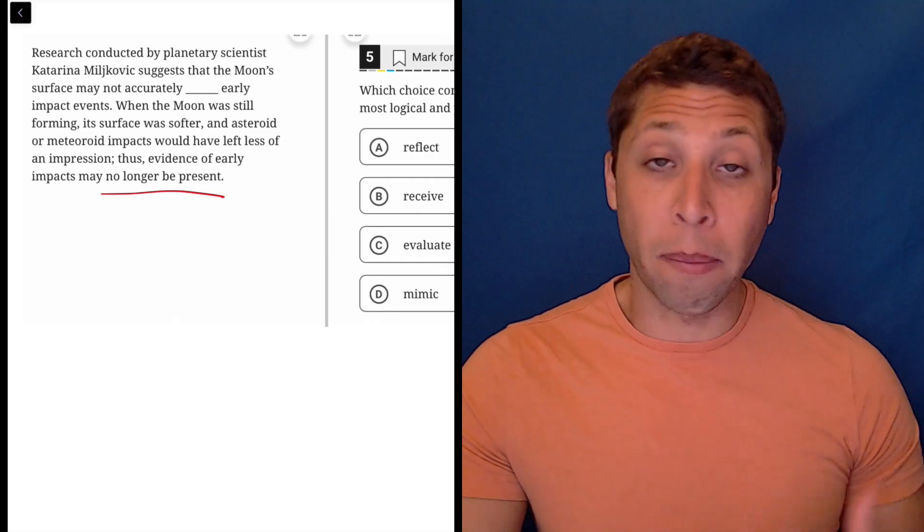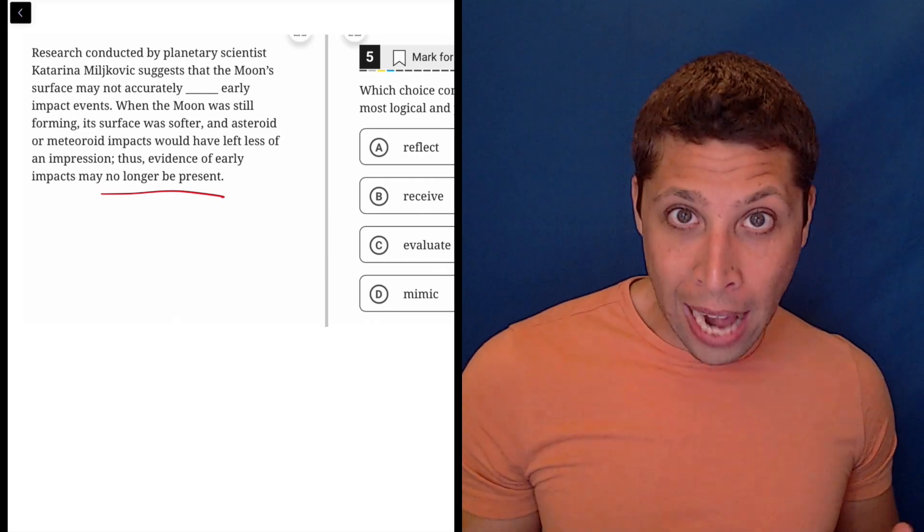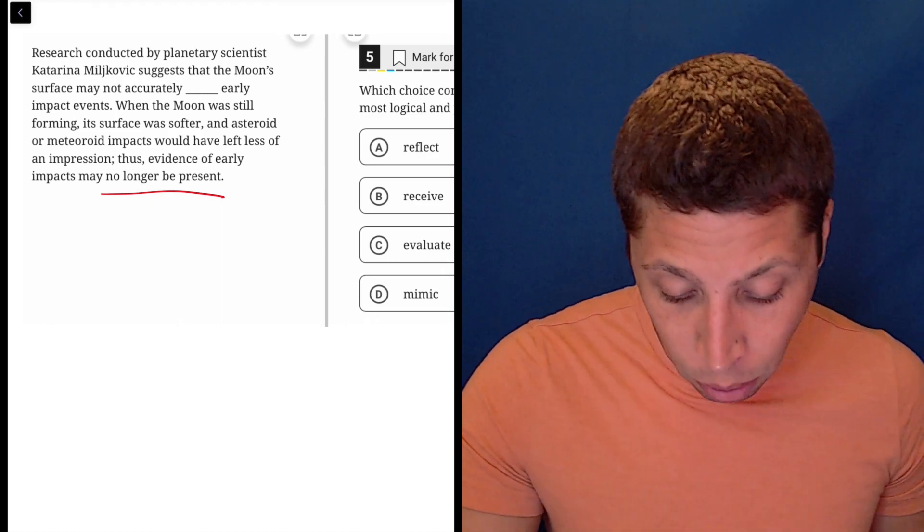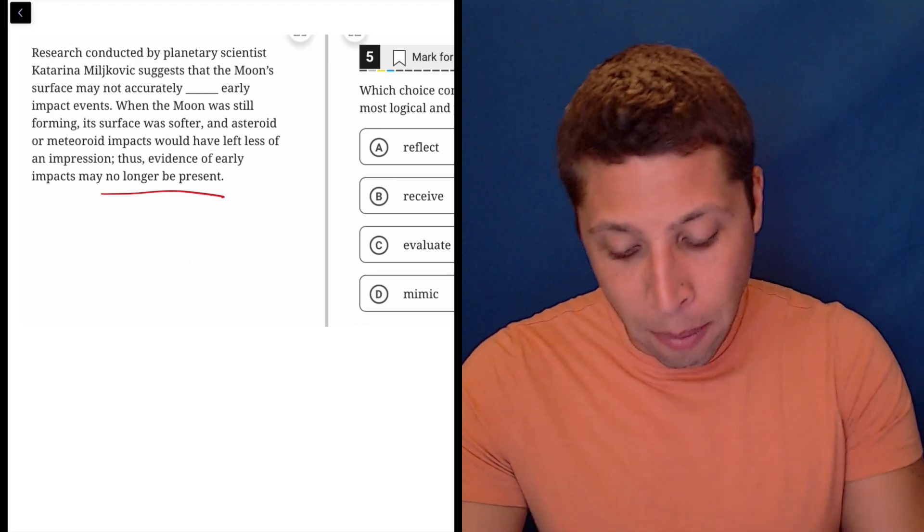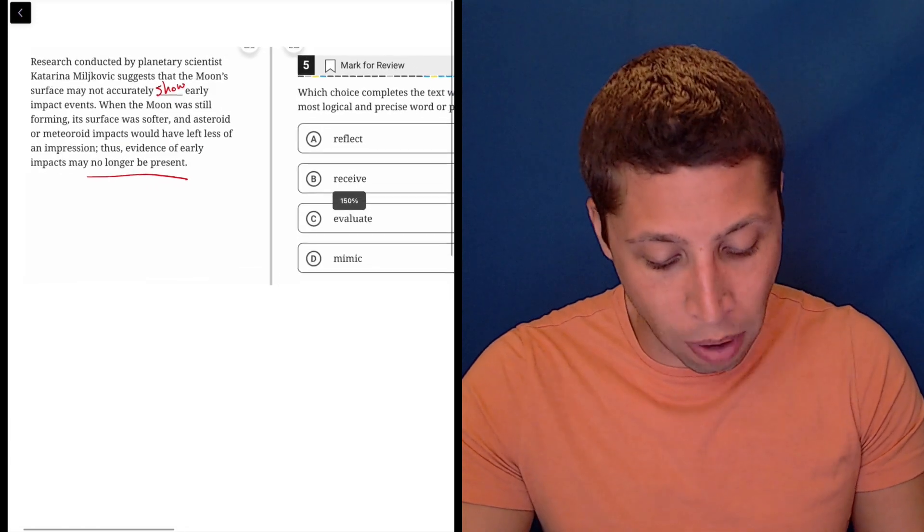I mean, look here, this is something that these sentences do a lot. They just repeat themselves. So this last part is just a repetition of what we're missing from the beginning. So they are no longer present. They may not accurately show. We're looking for something like this. This is just repetition.